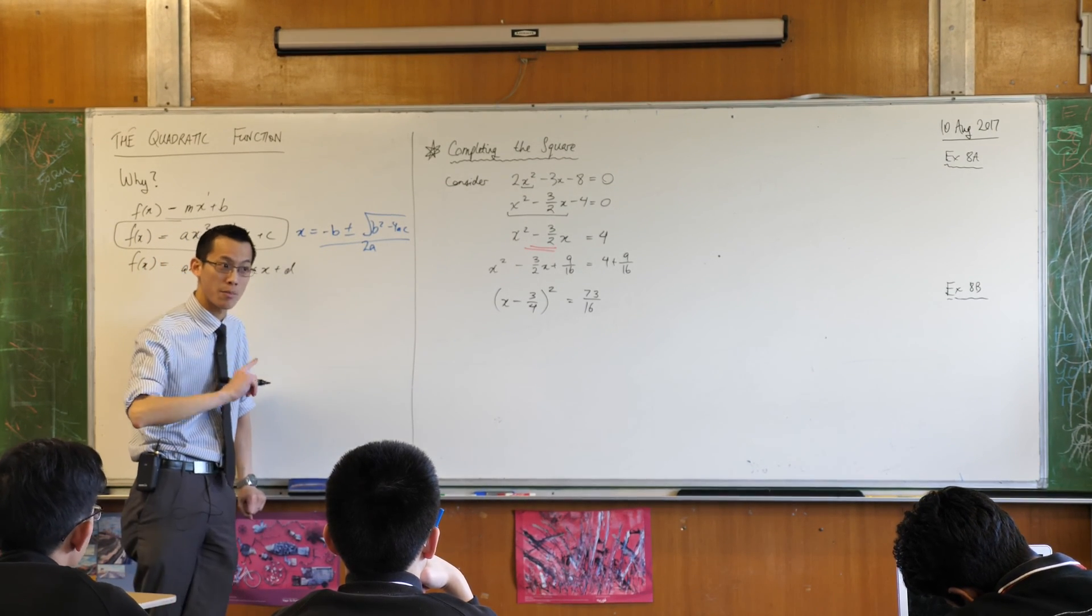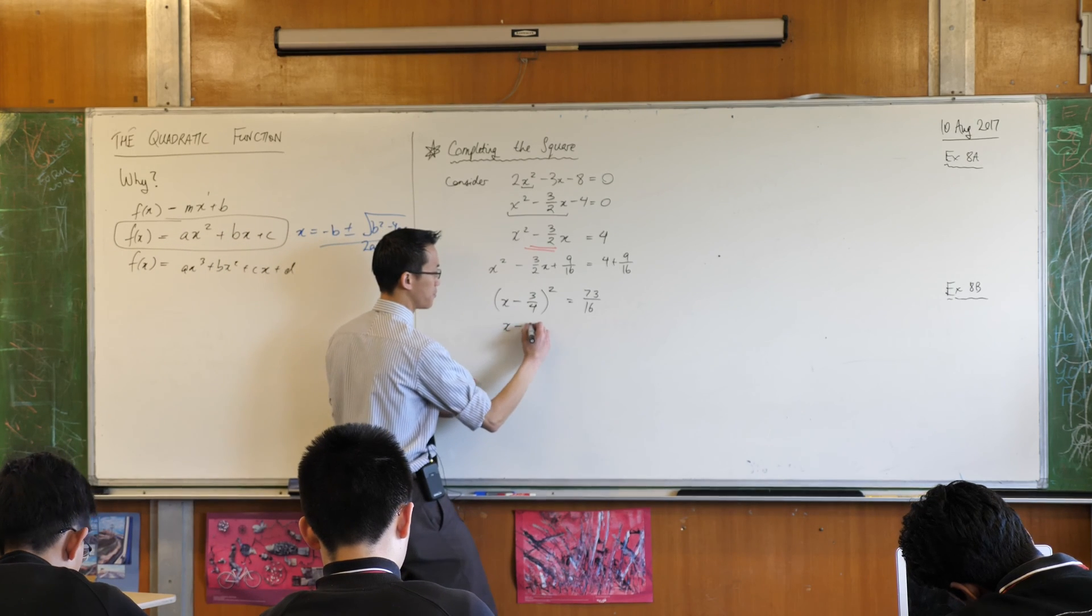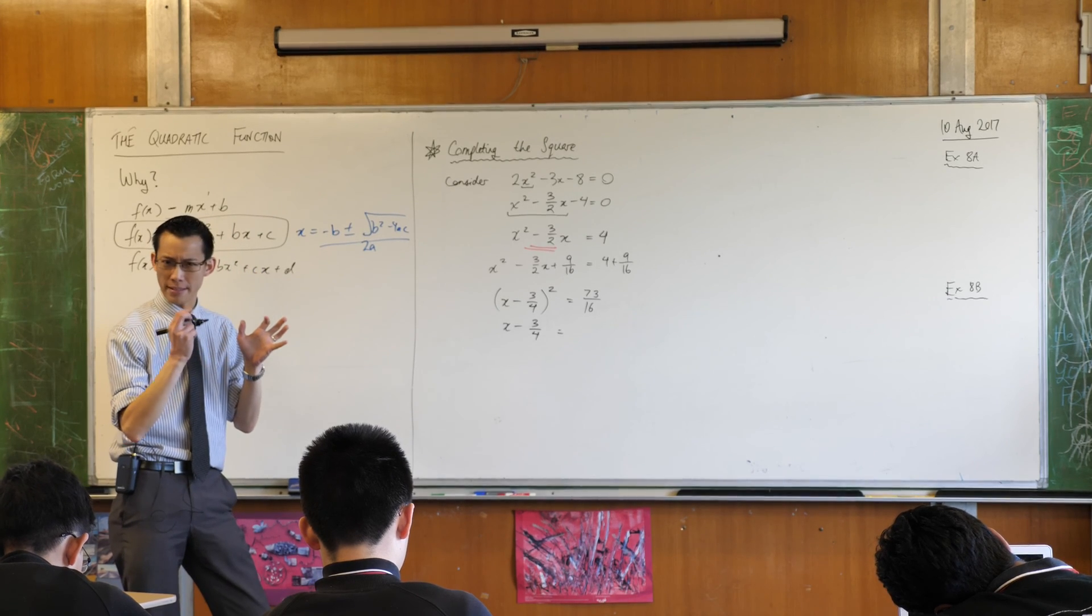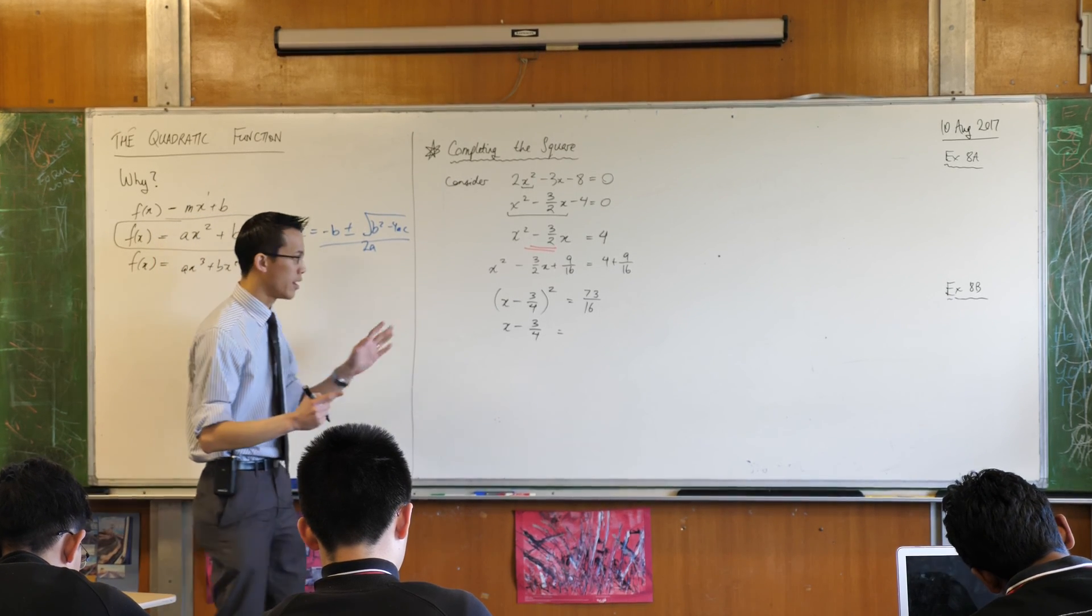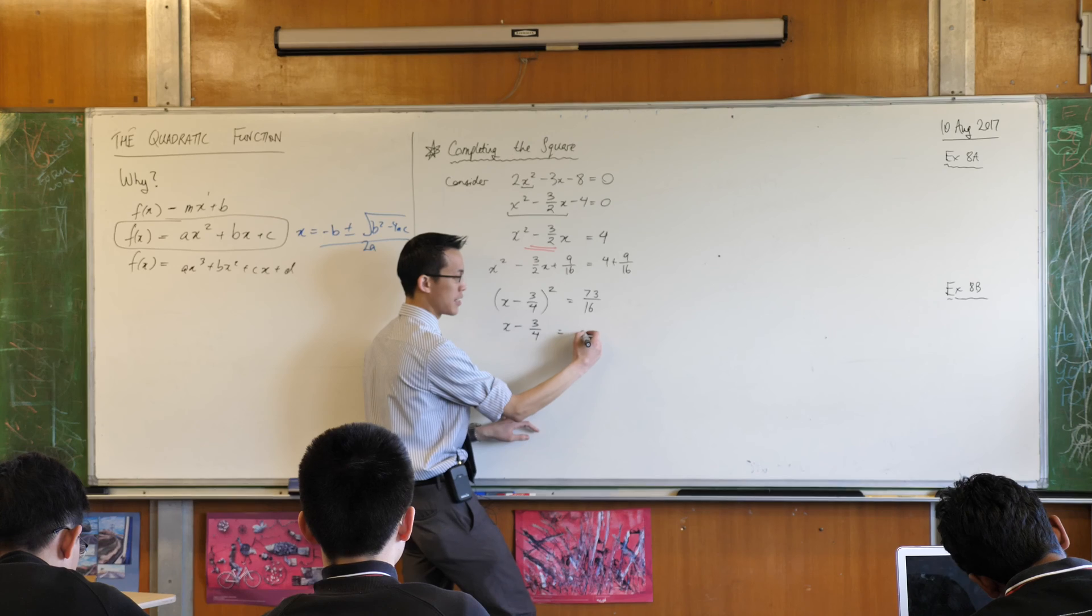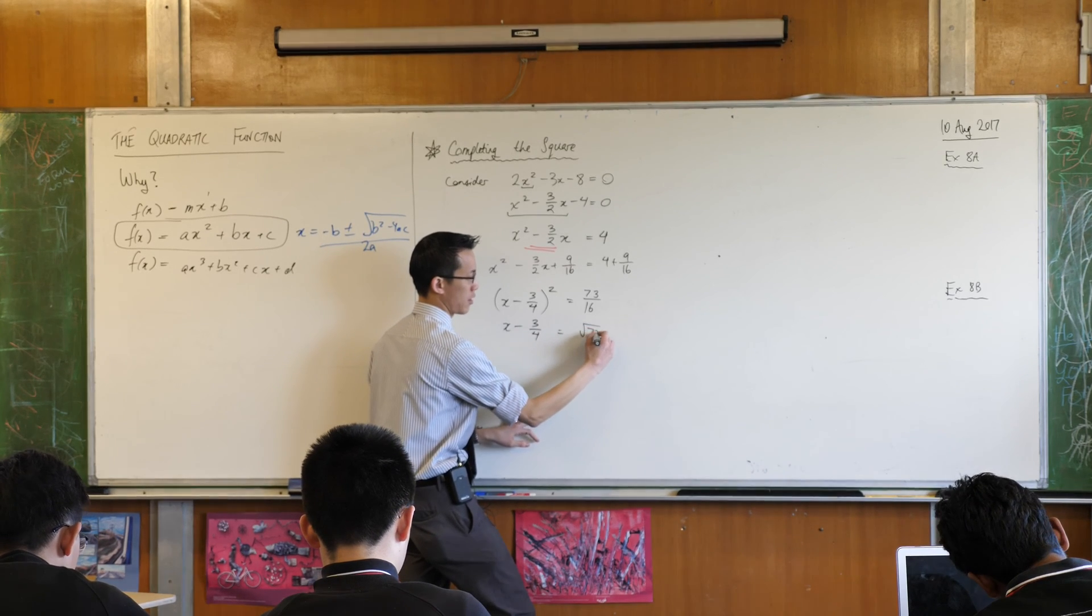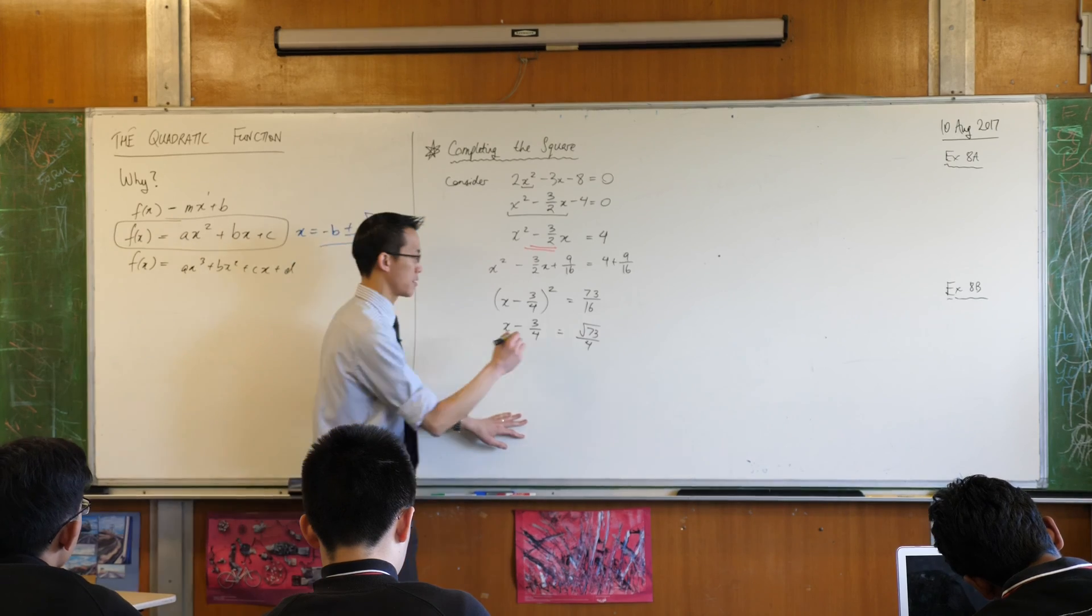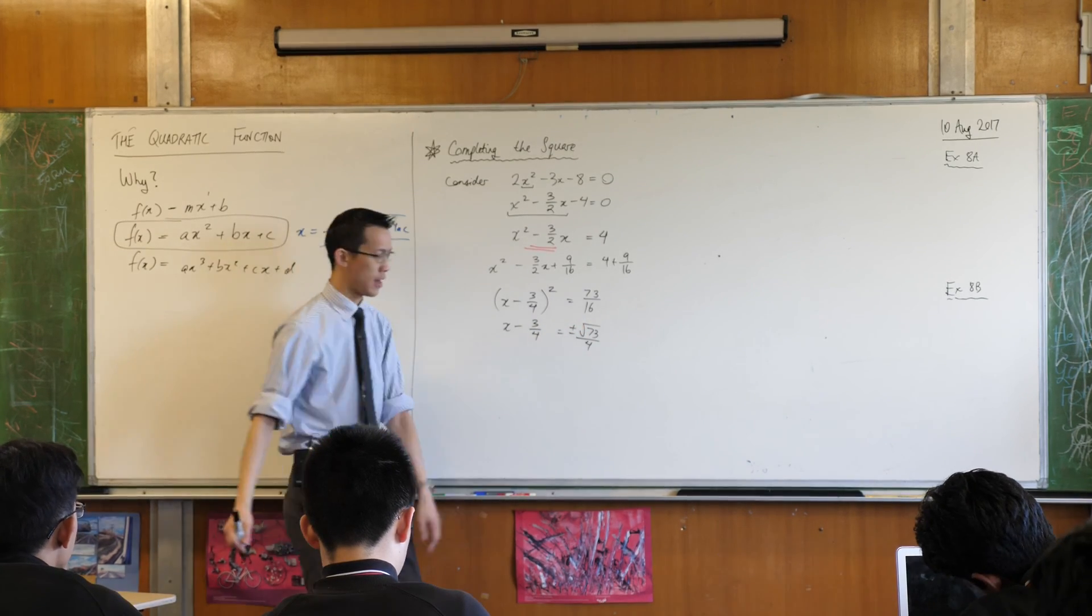I will take the square root of both sides. Now we remember that when you take the square root of both sides, you have to remember that you're expecting two solutions, not one. So on the right-hand side, I'm going to have to say not just root 73 on 4, I'm going to have to say plus or minus, that number.